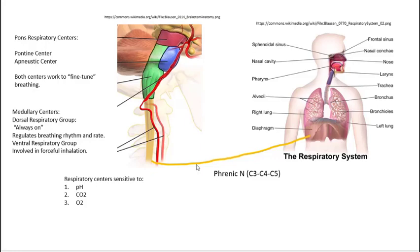So what controls the phrenic nerve? Well, it turns out there are some centers in the brainstem, and you remember the brainstem has three parts: there's the midbrain, the pons, and the medulla oblongata. So there are two centers in the pons and two centers in the medulla. The two centers in the pons together are called the pontine respiratory centers or pons respiratory centers. They include the pontine center and the apneustic center. The two centers in the medulla are the dorsal and ventral respiratory groups. So these are groups of neurons that control respiration. So let's look at the medullary centers first.